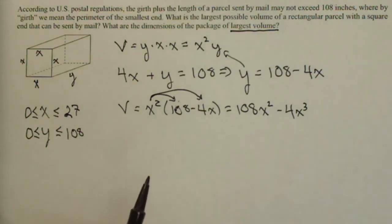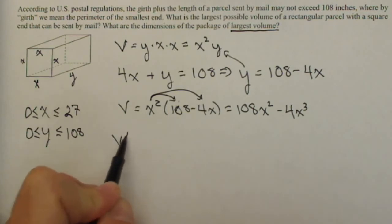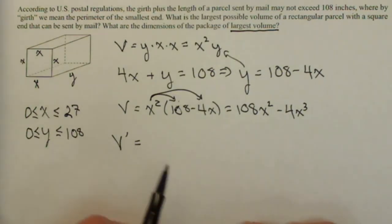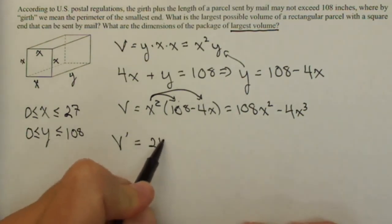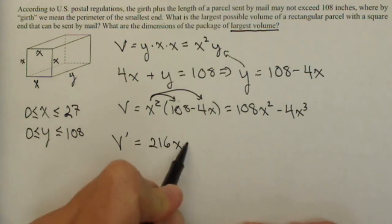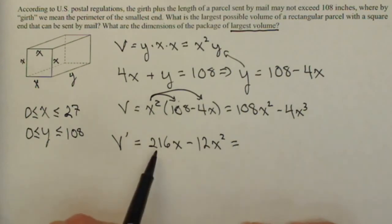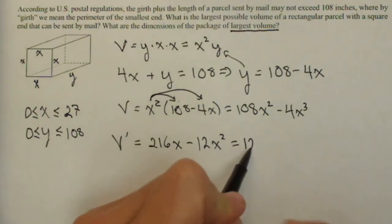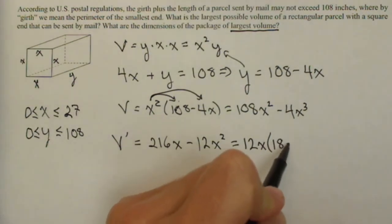So now we have an extreme value theorem application because we're now on a closed interval. So let's go ahead and find out our maximum possible volume. We're going to go into calculus mode and find our derivative to get any critical points. So v prime, we just have a couple of power rules, it's going to be 216x minus 12x squared.